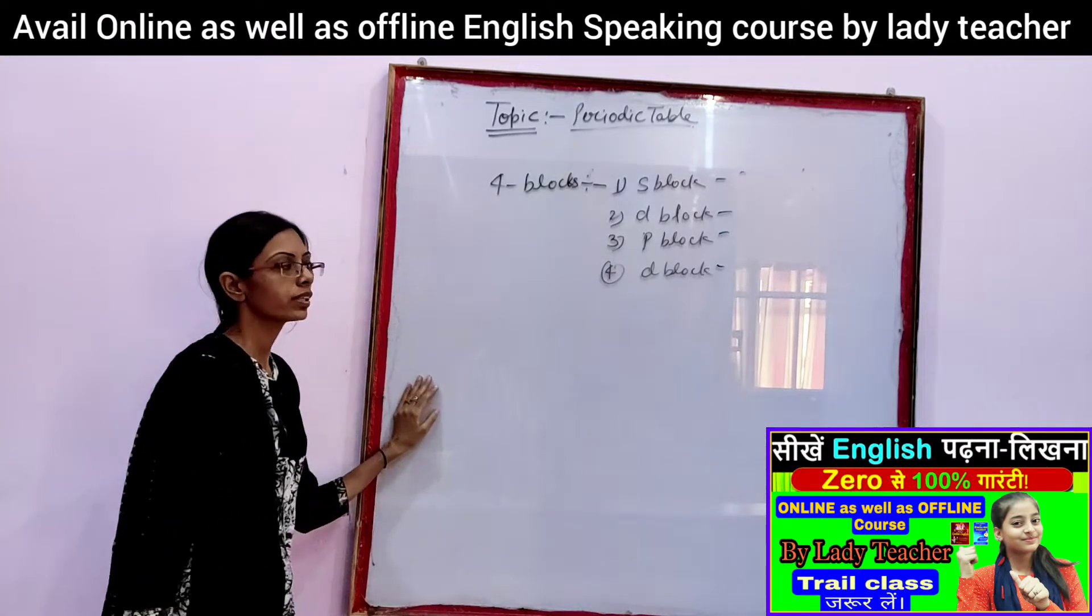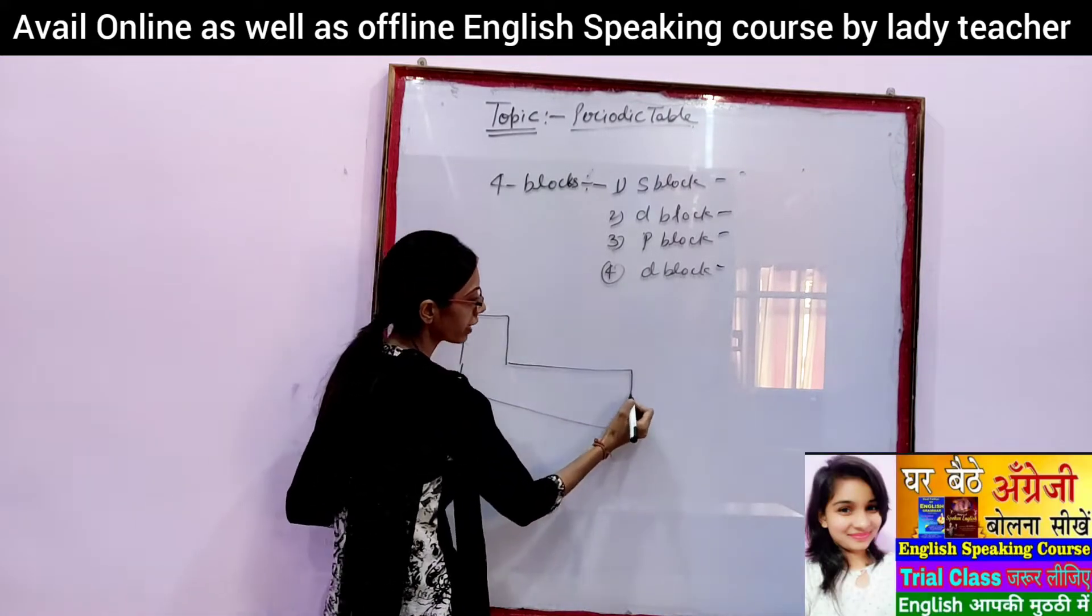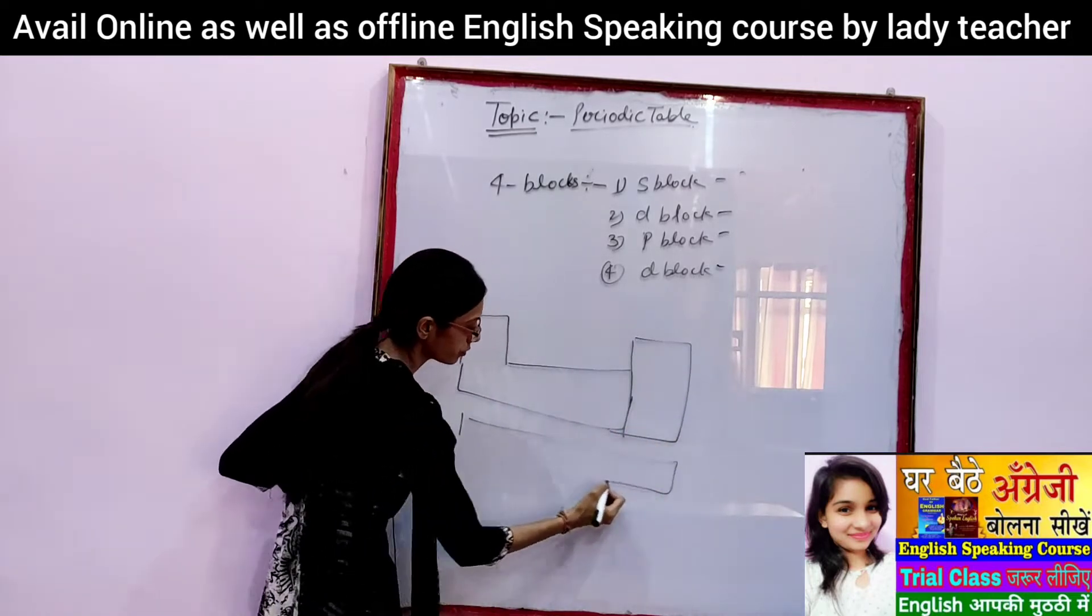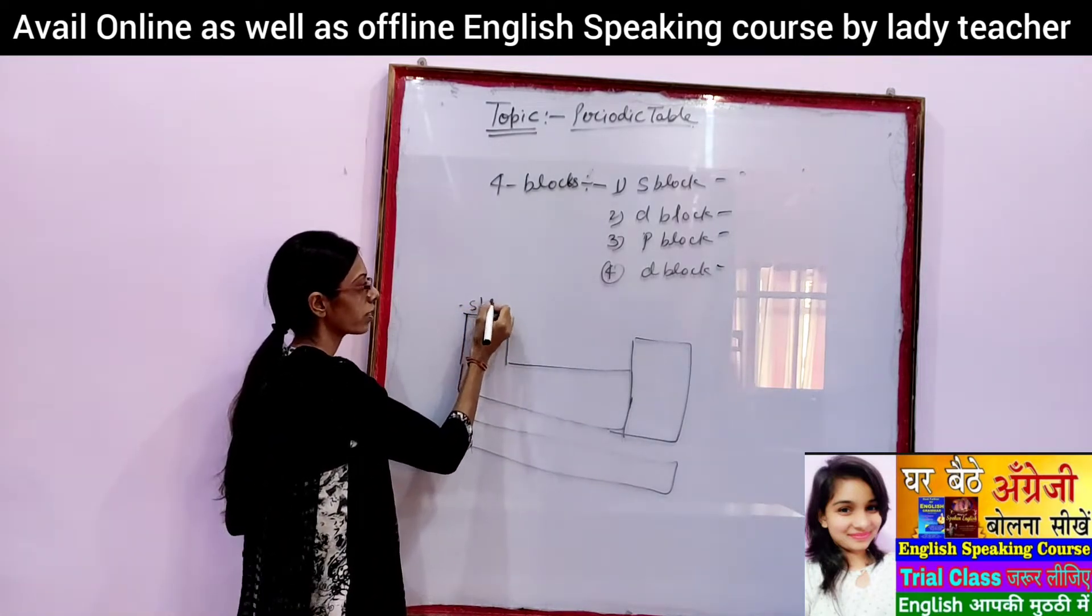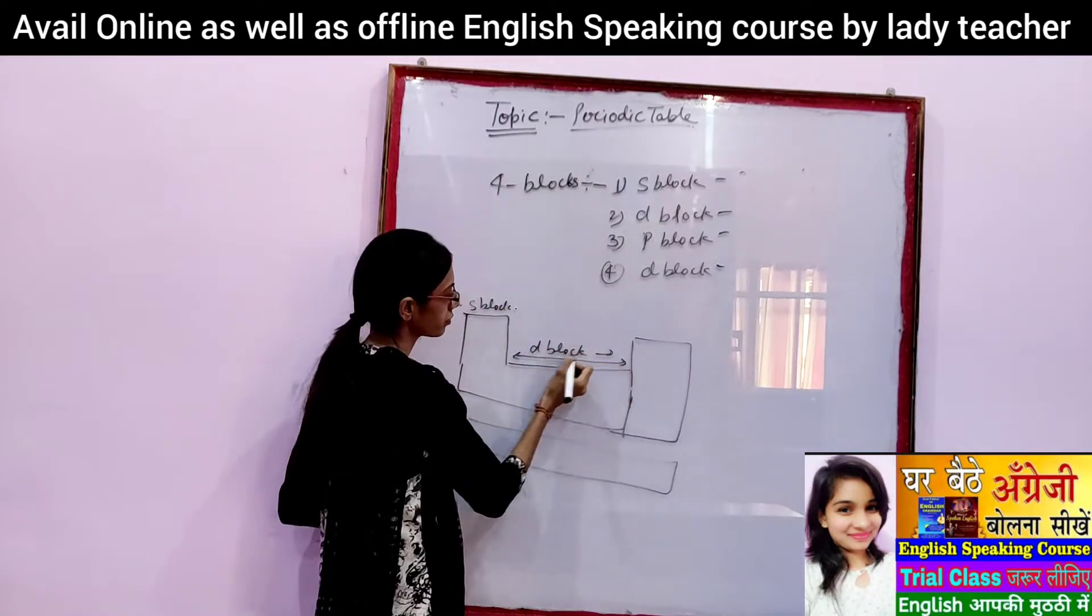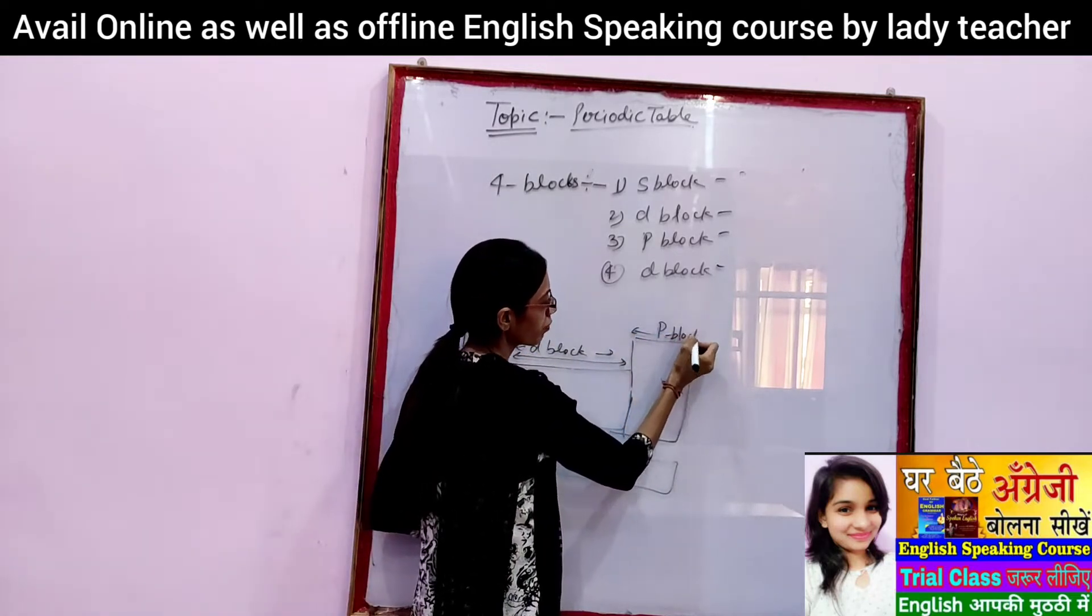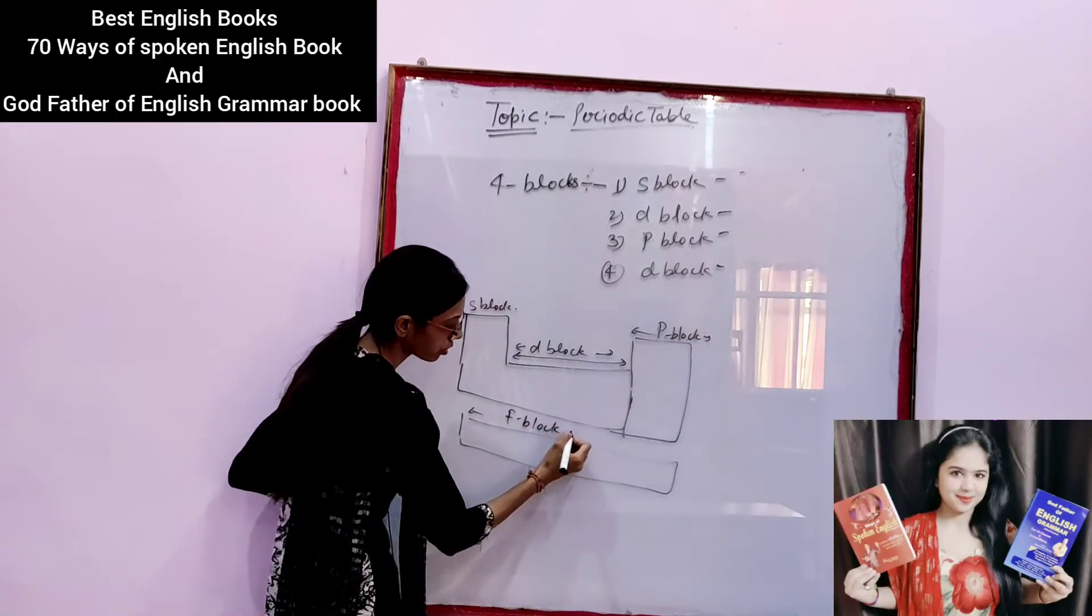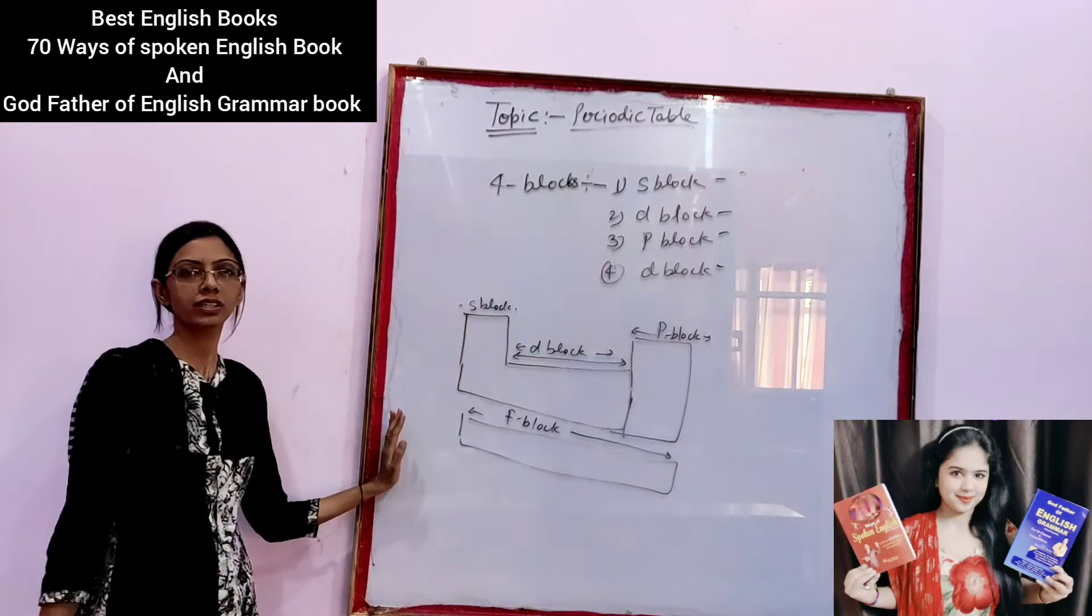First of all, I'll tell you that in a periodic table, when you draw a periodic table, the structure of the periodic table looks like this. Now, that is called S block, this one is called D block, this is called P block, and the last is called F block.